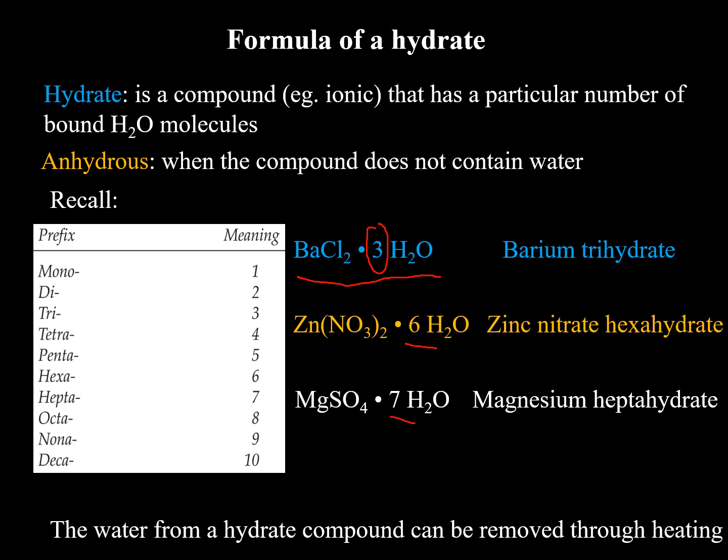Hopefully you guys remember your Greek from lecture class. We have mono, di, tri, tetra, penta, hexa, hepta, octa, nana, and deka. You use those when you're naming non-metal and non-metal, covalent compounds. We use this again for hydrates.